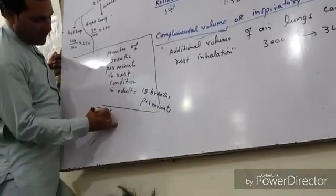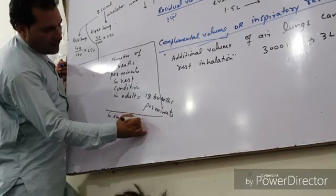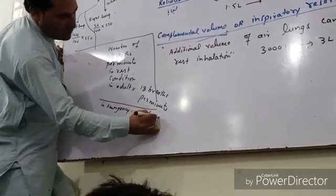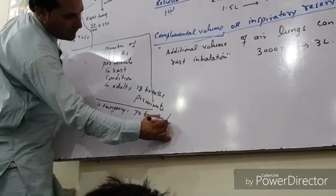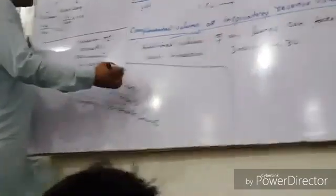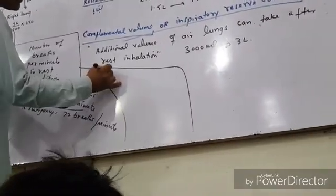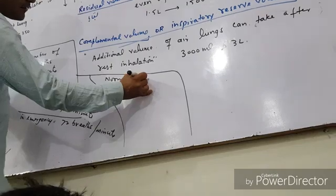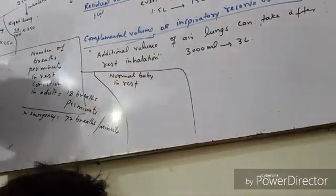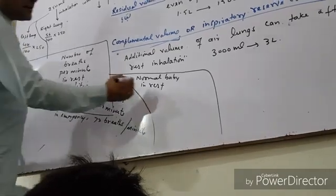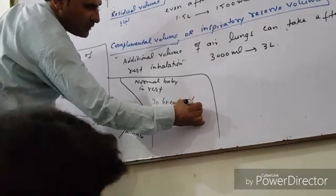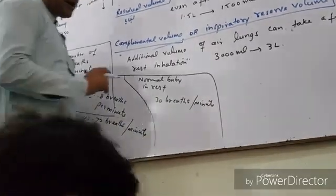In emergency, you can see more breaks on it. Normal baby interest — I know the rest. 30 frames per minute — the human can breathe. That's all for the operation.